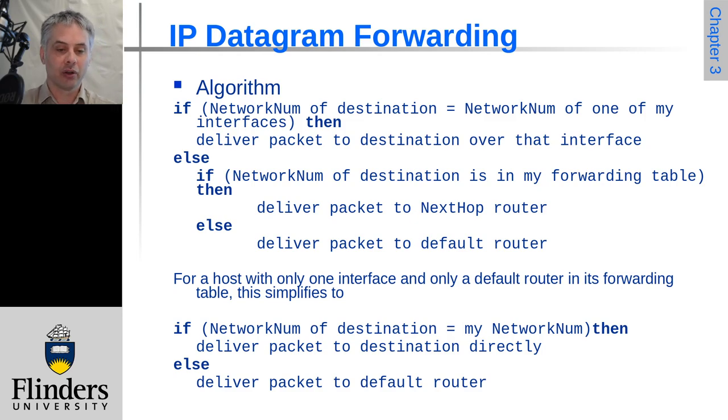Alternatively, if the network number is listed in the forwarding table, in the routing table for that node, and it knows a particular interface, a particular router that it should forward those packets to, then it should do so. Otherwise it should deliver to the default router, the fallback router in effect.